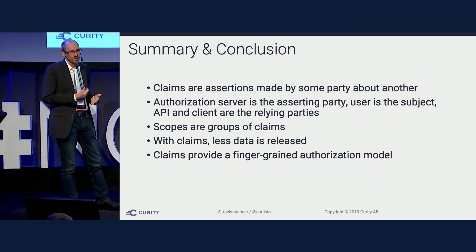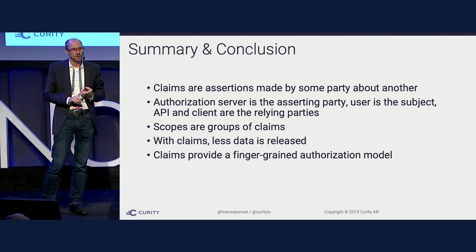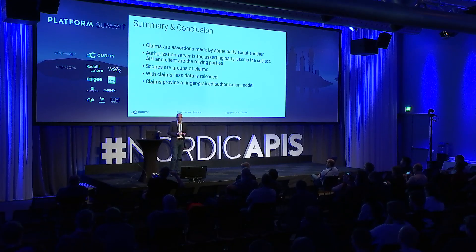In summary: claims are an assertion made by some party about another. The authorization server — the OpenID Connect server — is the asserting party that can say something about the end user, the resource owner, making that entity the subject. The client, the API, or both will be the relying party relying on those assertions. Scopes are a group of claims — controversial perhaps, but that's what we've learned them to be. With claims, less data is released, making this a better and more private-by-design approach. It does mean more complex queries for clients specifying certain claim values, but we still always have the scope macro or shorthand for keeping clients simple. Claims provide a finer-grained authorization mechanism. Thank you very much.